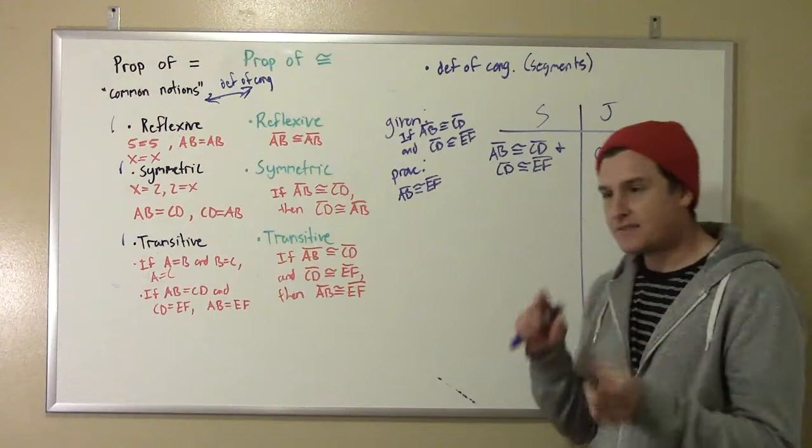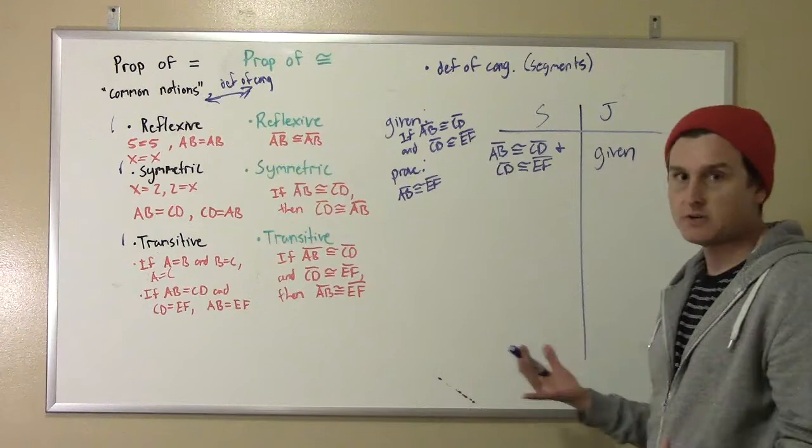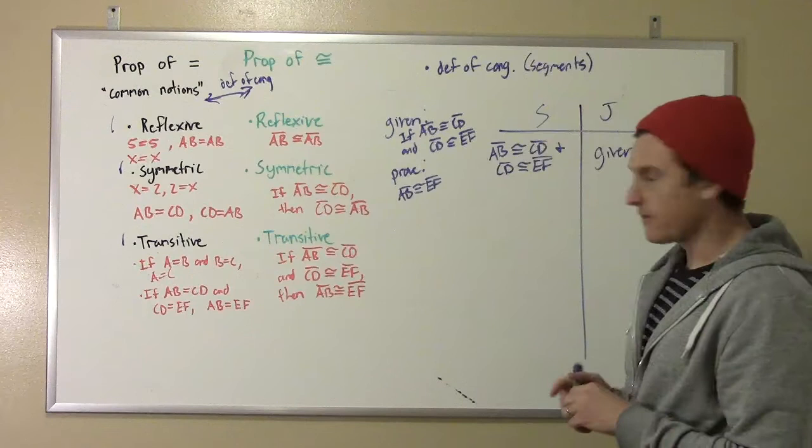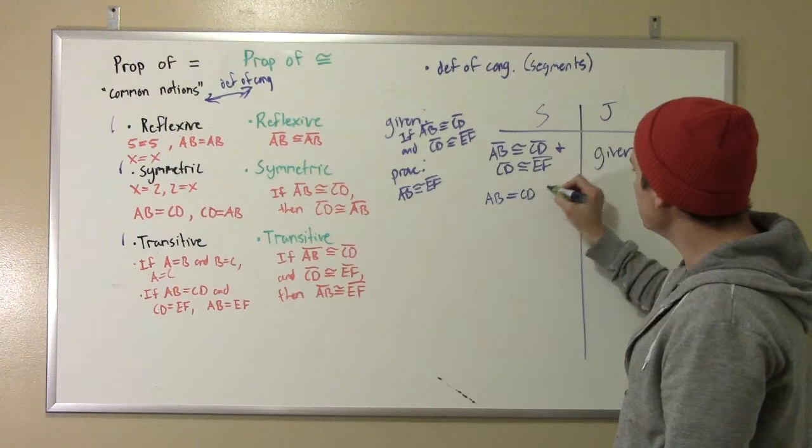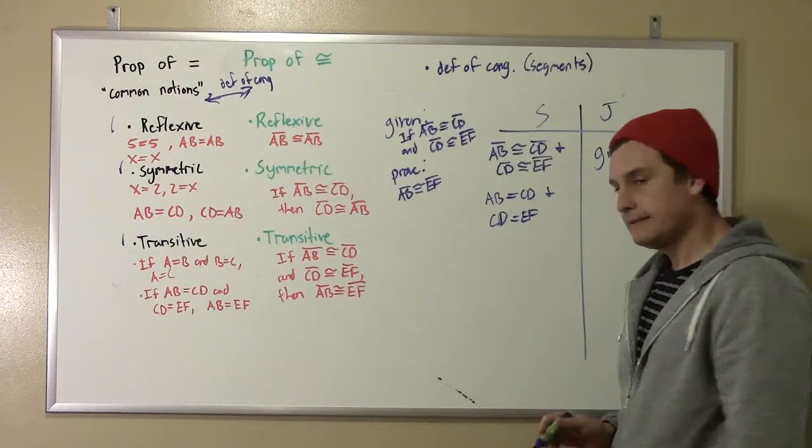But the immediate thing we can go to once we have two congruent segments is, okay, well, their measurements are equal then, right? That's what congruence means. Congruence means equal in measure, equal in length, equal distance, right? Definition congruent segments. So the next statement we're going to say is, okay, well, then AB equals CD, and CD is equal to EF. Just definition of congruence.